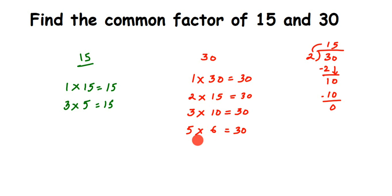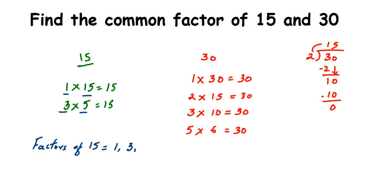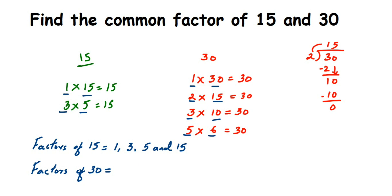30 doesn't go in the 7, 8, or 9 tables. It goes in the 10 table, but 10 × 3 is the same as 3 × 10, so we skip it. Now we can list the factors. Factors of 15: 1, 3, 5, and 15. Factors of 30: 1, 2, 3, 5, 6, 10, 15, and 30.